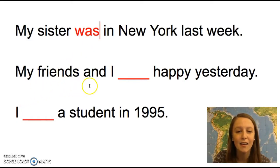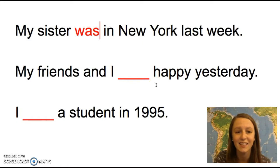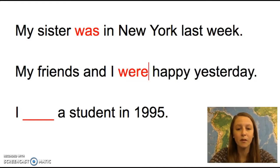Let's look at the next example: my friends and I ___ happy yesterday. Again, we have a past tense time word, yesterday. And we don't have a verb, so we'll use a be verb in the past tense. My friends and I, the subject, is like we, so we'll use the be verb were. My friends and I were happy yesterday.